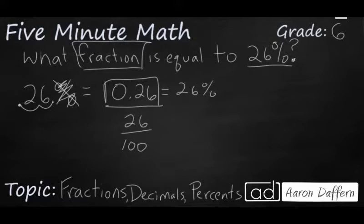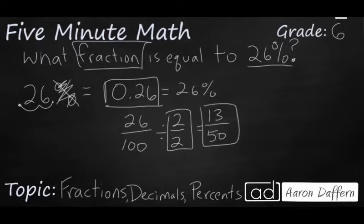But as always, we need to see, do we need to reduce when in doubt if they're both even? Let's go ahead and divide by two because remember two over two is equal to one. We're just going to make it look different. And that's going to be 13 fiftieths. So 13 fiftieths is the same as 26%.